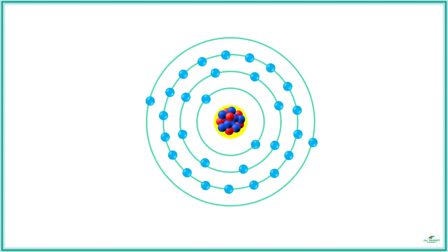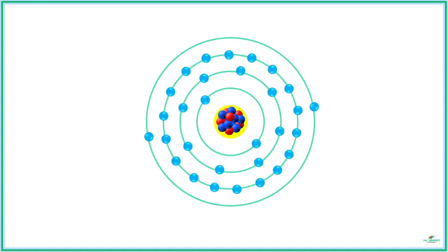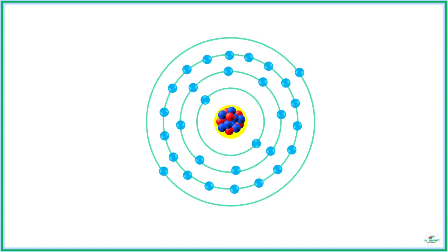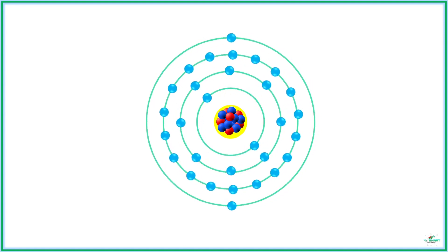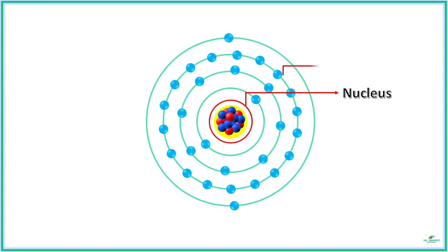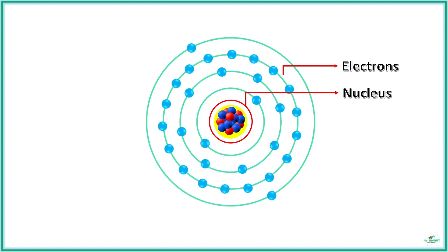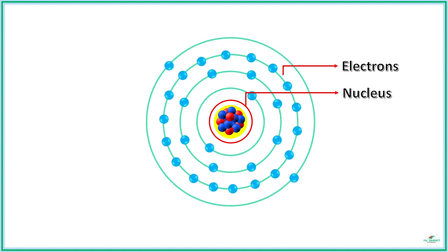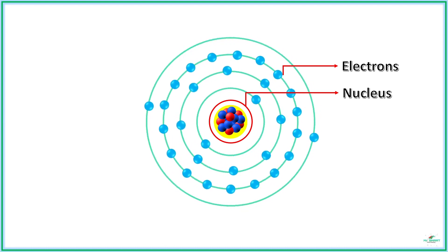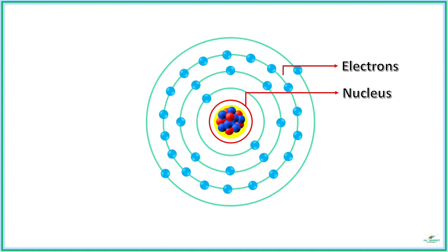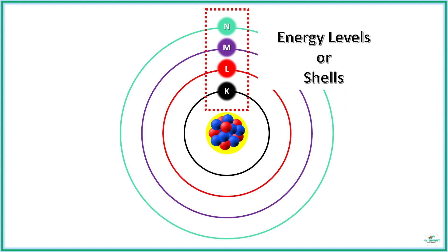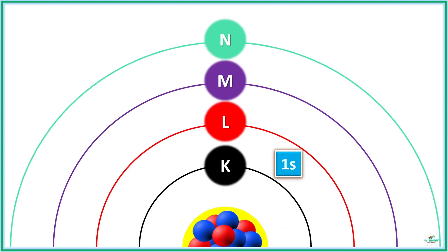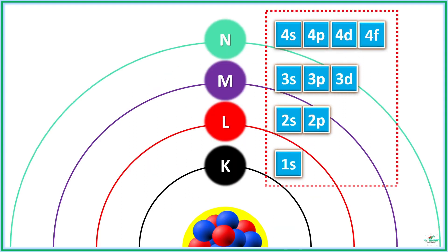All the materials in the universe are made up of tiny constituents called atoms. These tiny things actually define the property of that material. An atom contains a nucleus in its center, consisting of protons and neutrons, and has electrons revolving around it in an orbit. The orbit in which the electrons are revolving are called shells or energy levels. Each energy level is filled with electrons with respect to the energy packets called orbitals.